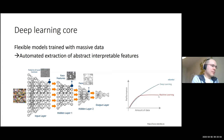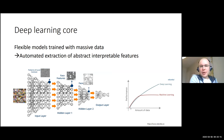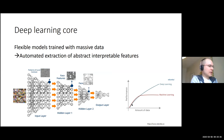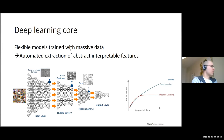The key difference from traditional machine learning is that traditional ML performance plateaus at some point — with prediction accuracy on the y-axis and amount of data on the x-axis, once model complexity is constrained, adding more data doesn't help. In deep learning, you can in principle learn more and more complex features with more data, so there is no such threshold.